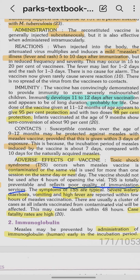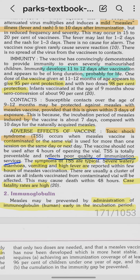A measles-like illness is a product-related reaction — mild, with fever and rash lasting one to three days. An adverse effect is toxic shock syndrome, which is not product-related but an immunization service problem caused by using a contaminated or expired vial, or using the vaccine after four hours of opening. Symptoms include severe watery diarrhea, high fever, and vomiting within a few hours and can be fatal within 48 hours.